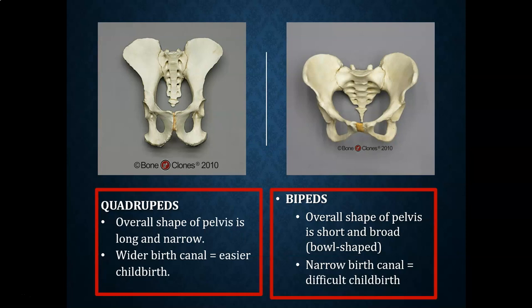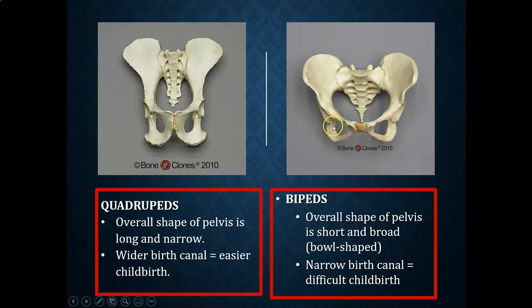The pelvis is another key feature for determining quadruped versus bipedal hominin status. Quadrupeds have an overall long and narrow pelvis with a wider birth canal — for a chimpanzee, birth is less dangerous or complicated. Bipeds have a short, broad, bowl-shaped pelvis with iliac blades that curve inward. The pelvic inlet is relatively narrow, which is one of the evolutionary trade-offs of bipedal locomotion.